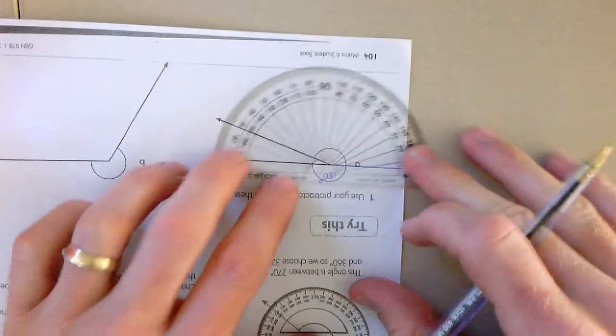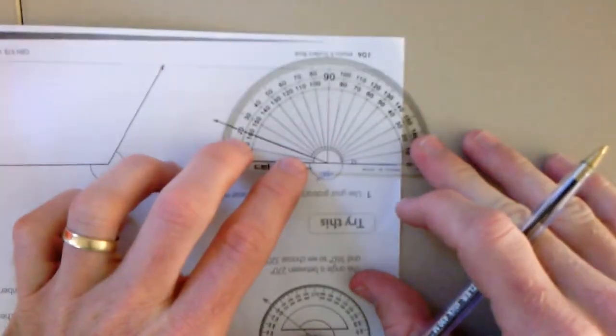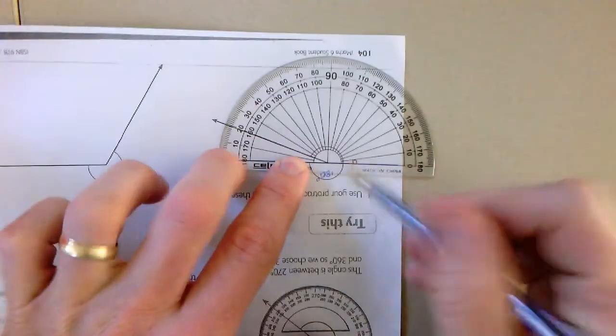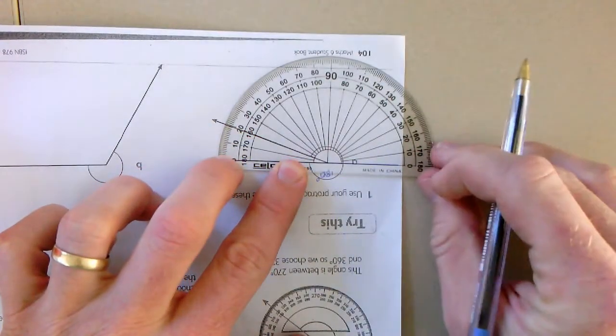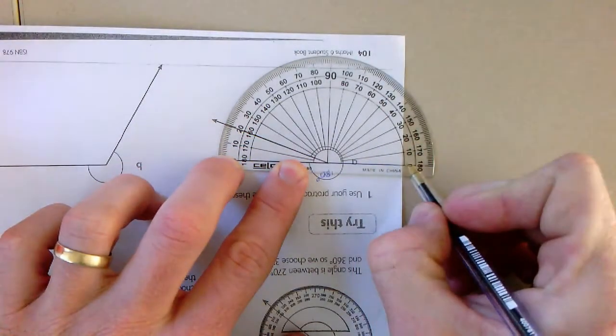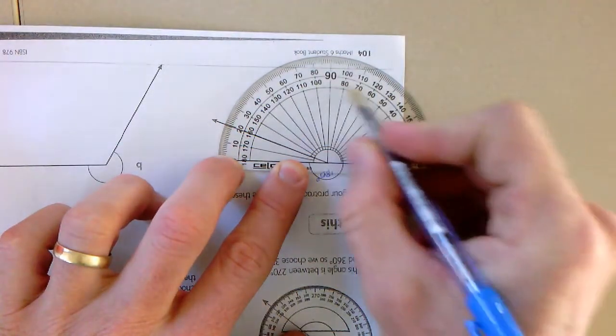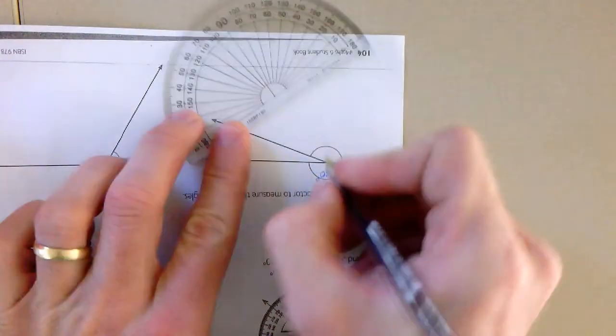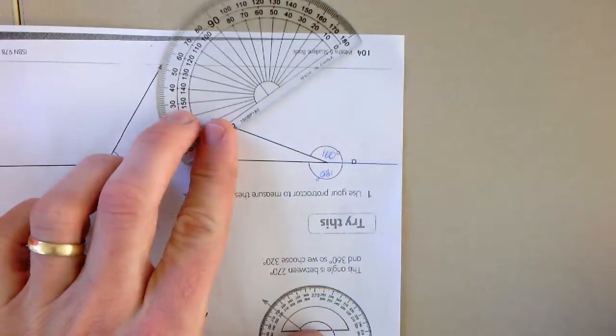So I turn it around. I can actually turn my whole page around to make it simpler. Line the T up with the vertex of the angle. Now I'm adding on the bit that I haven't measured yet. So from the zero, I'd measure around 10, 20, all the way around to 160 degrees. So this side is 160 degrees.